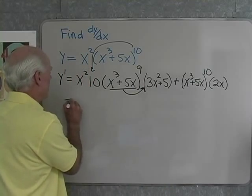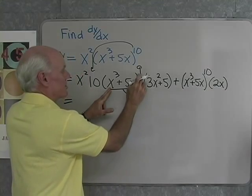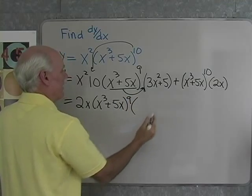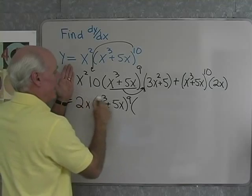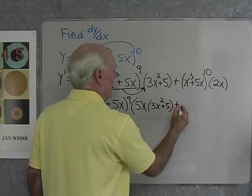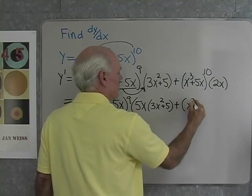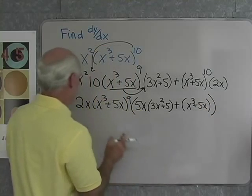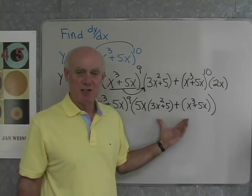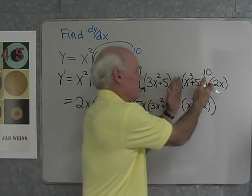The rest is just simplification. I can factor out a 2, an x, and x cubed plus 5x to the ninth, giving 2x times x cubed plus 5x to the ninth times, looking at what's left: 5x times 3x squared plus 5, plus x cubed plus 5x. That's first times the derivative of the second, plus the second times the derivative of the first. You can multiply out and combine like terms from there.